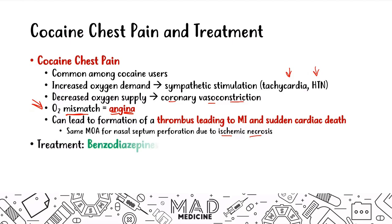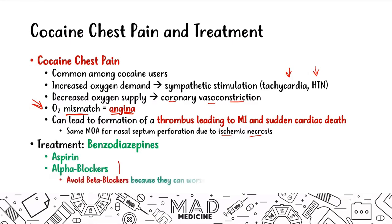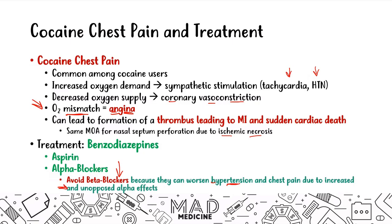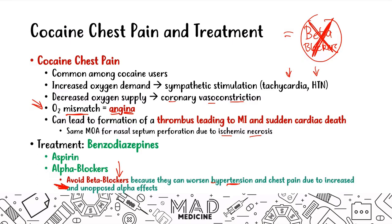The treatment for cocaine chest pain is benzodiazepines. You can also give aspirin and alpha blockers. Importantly, you want to avoid beta blockers because they can worsen hypertension and chest pain due to increased and unopposed alpha effects. So you give alpha blockers — no beta blockers.